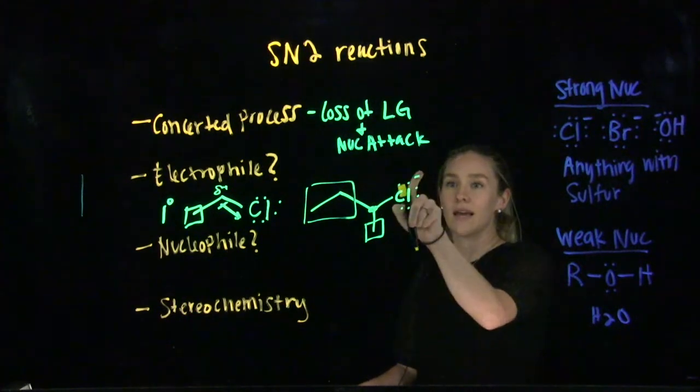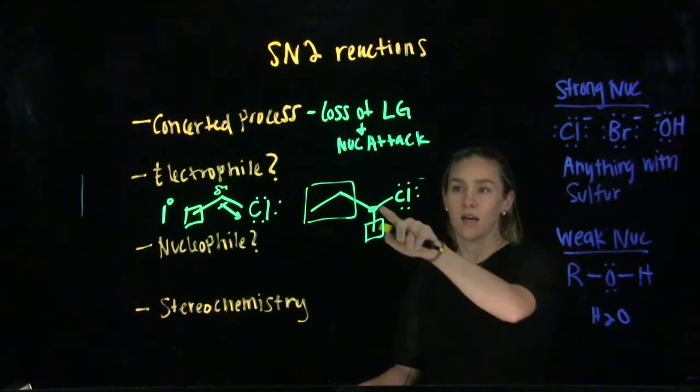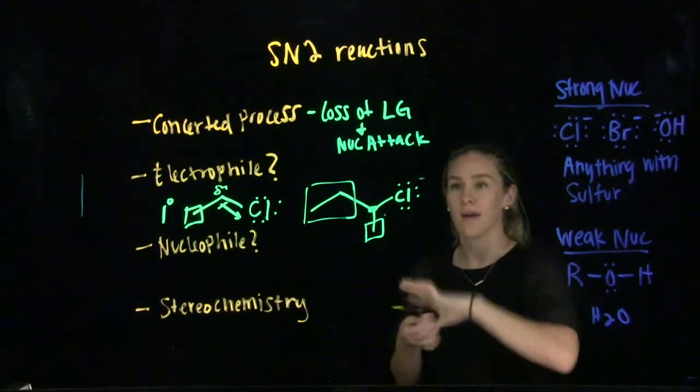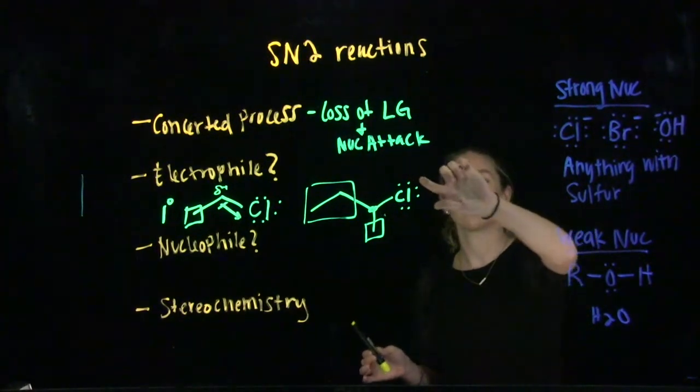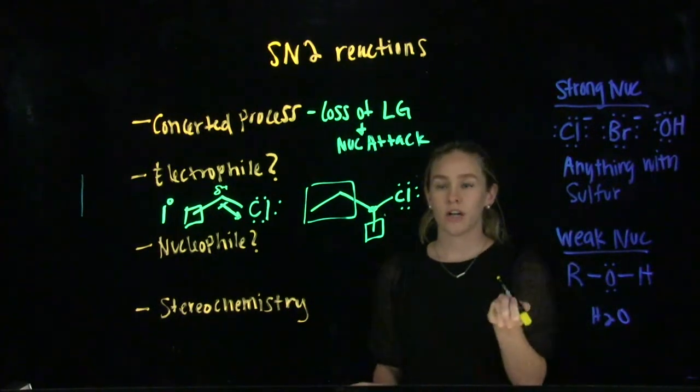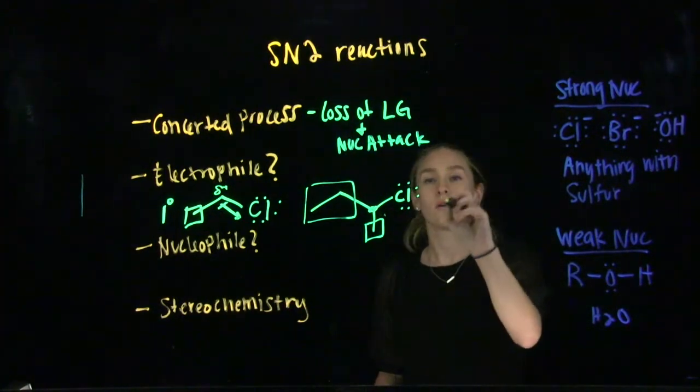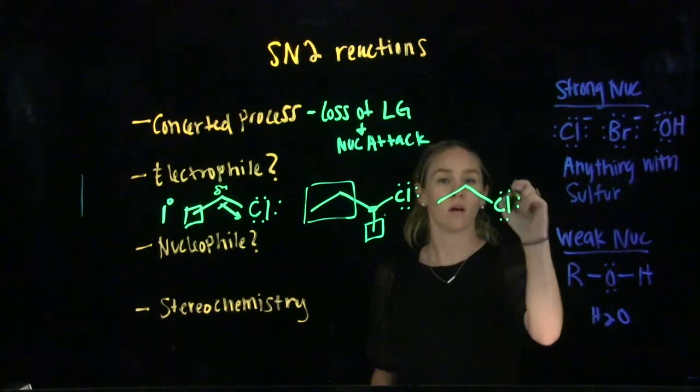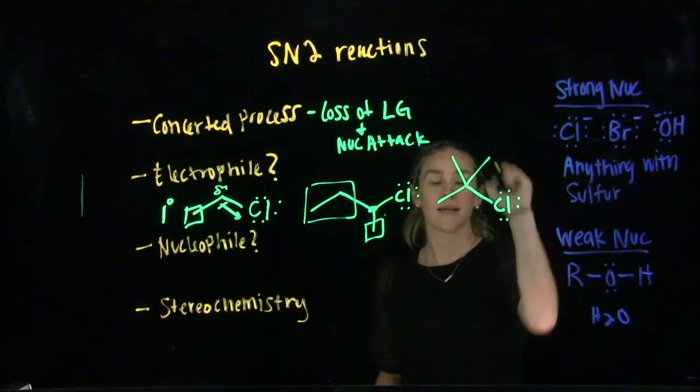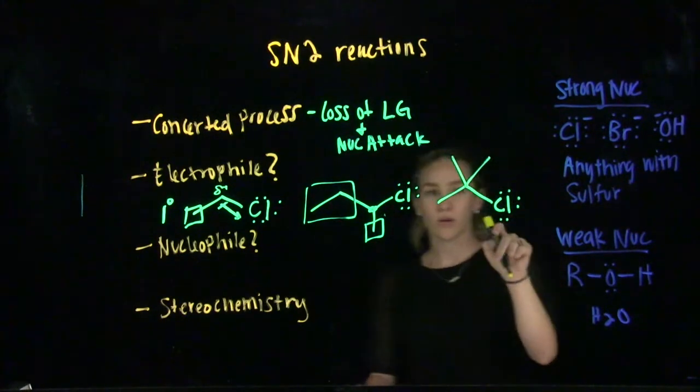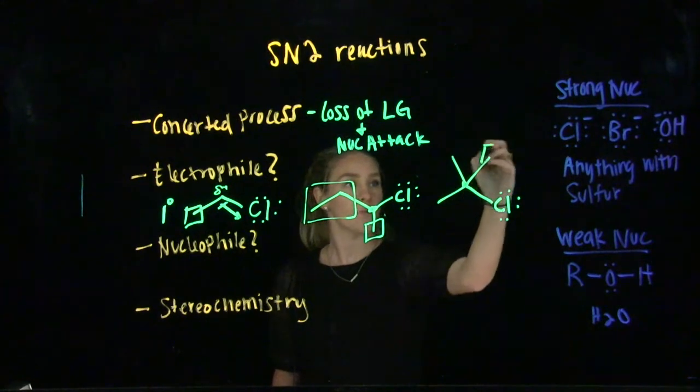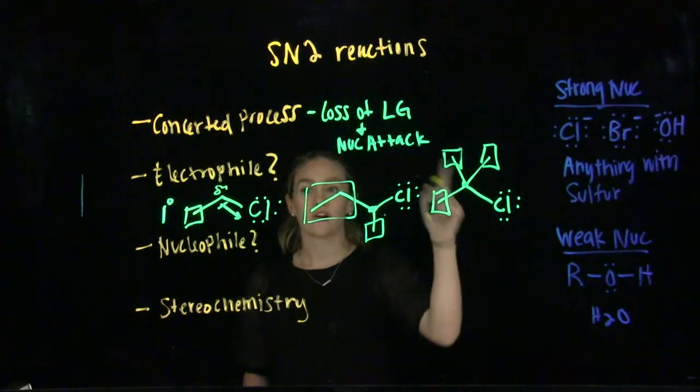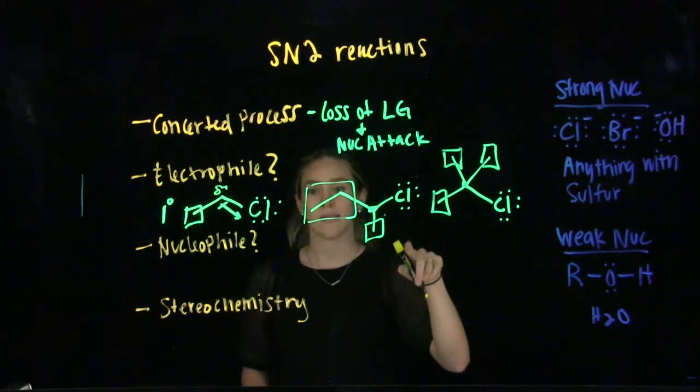A tertiary electrophile would look something like this. Because your electrophilic center right here has one, two, three other carbon hydrogen groups attached to it.